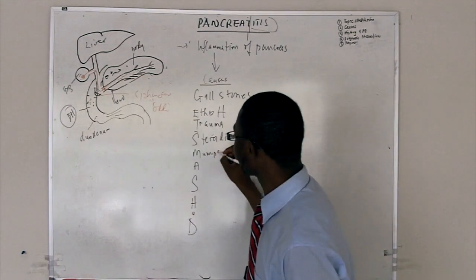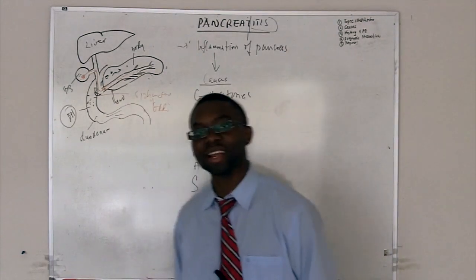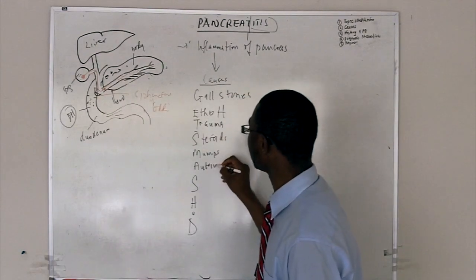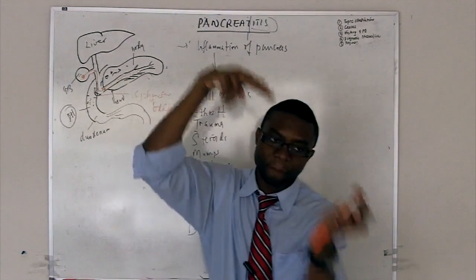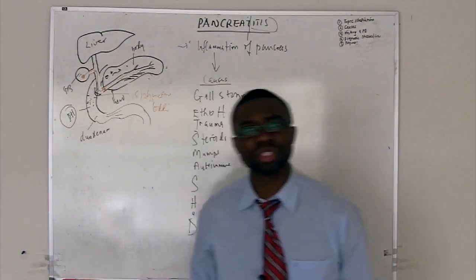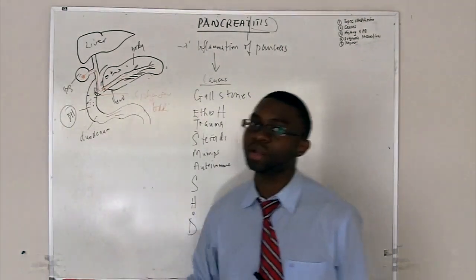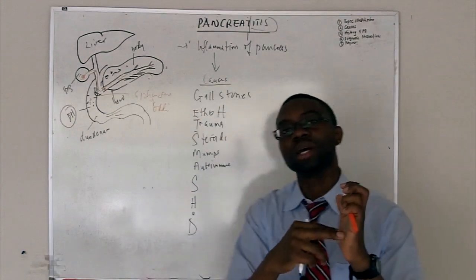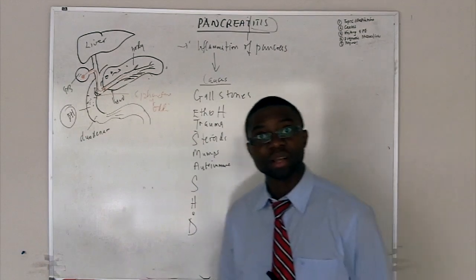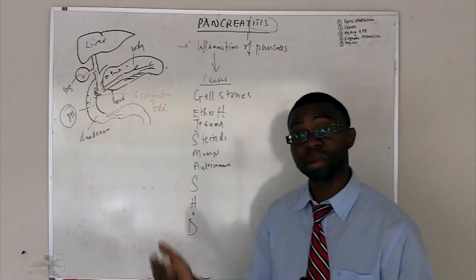Mumps, the same virus that causes mumps, parotitis, orchitis, it's a bad boy. It's been shown to cause pancreatitis. Autoimmune. Antibodies can come and start binding to your pancreas. Patients with connective tissue diseases, lupus, Sjogren's, they can form antibodies to the pancreas. Even diabetes can form autoimmune antibodies to the islets of Langerhans. It can cause some kind of pancreatitis.